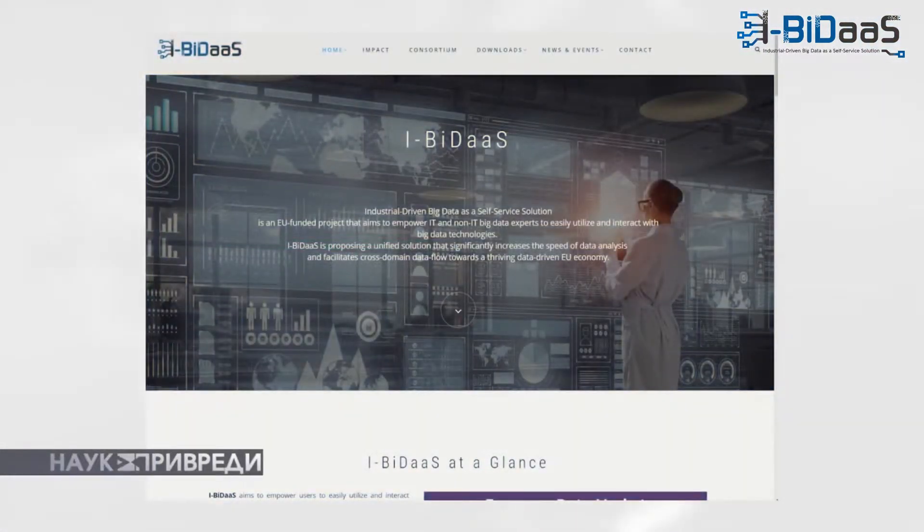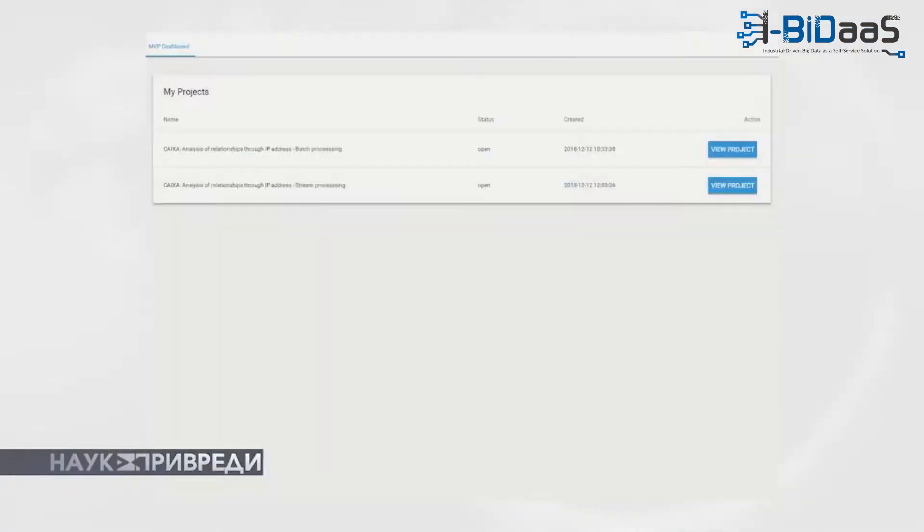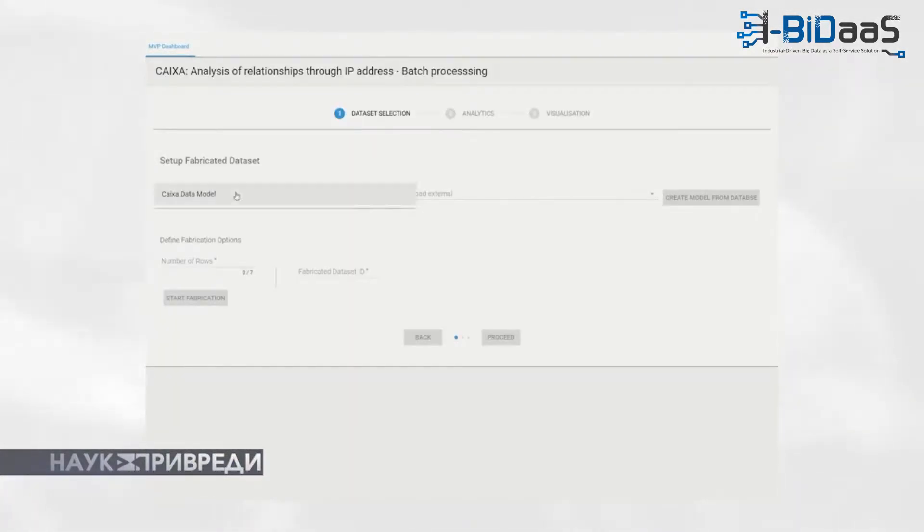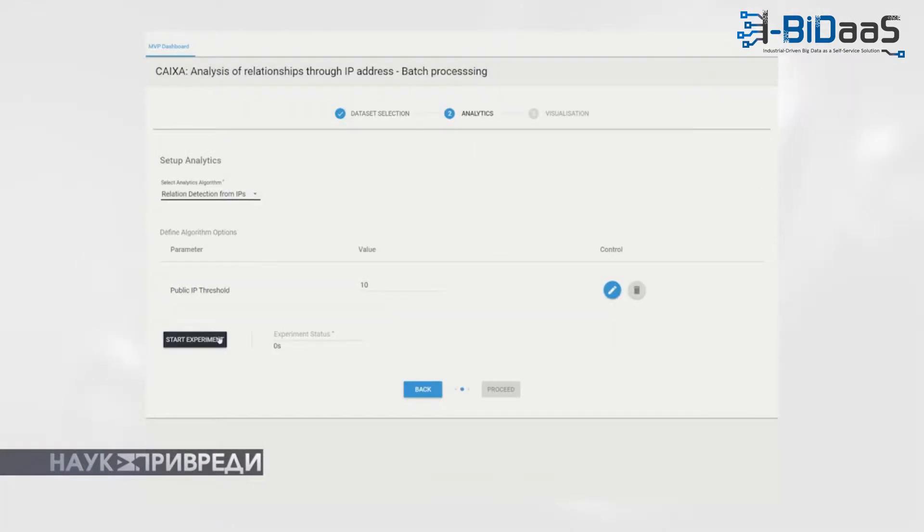One use case example is from the banking domain. It's about testing transactions between bank users based on IP address. In the first phase of the application, the system creates a map of relationships between bank users to find specific connections between clients.